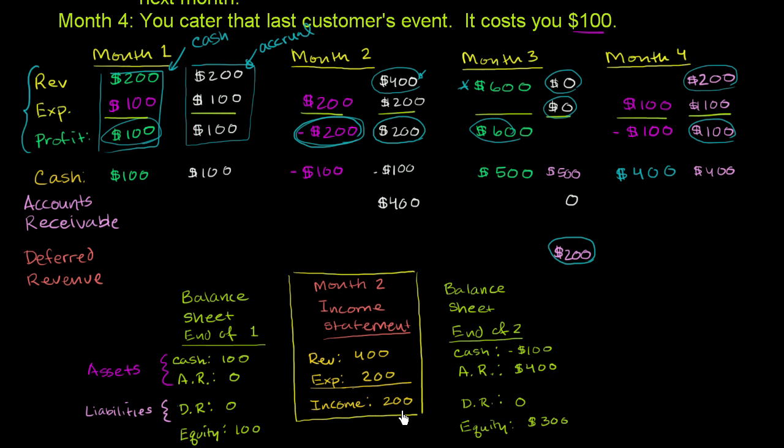$400 minus $200 gives us $200 of income. An income statement tells us what happened over a period of time. What was the activity? How much revenue, how much expenses, and other things. This is just a super simplified one without taxes, without interest, without other types of expenses over here.